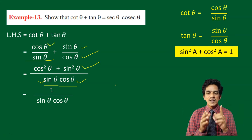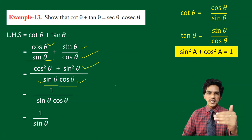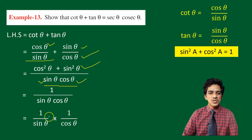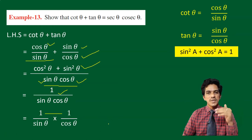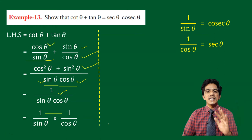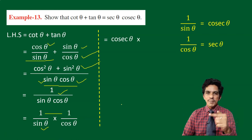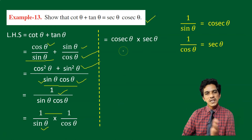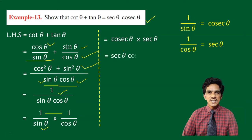Now, if we write the numerator as 1 into 1, then 1 by sin theta into cos theta can be split into the product of two fractions: 1 by sin theta into 1 by cos theta. We already know that 1 by sin is cosecant and 1 by cos is secant. So finally, we can write it as secant theta into cosecant theta, which is our right-hand side. This is how we used the trigonometric identities and the relationships between trigonometric ratios to solve this problem.